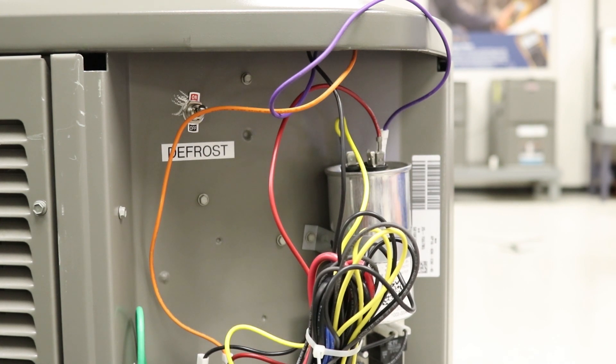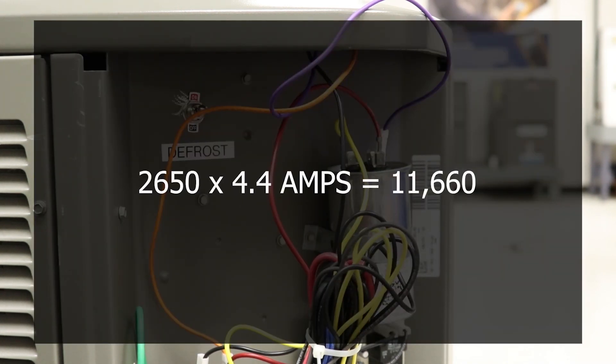Same thing for the hermetic side of things or the compressor side of things. We're going to take 2650, multiply it by the 4.4 amps that we had, which gives us 11,660.